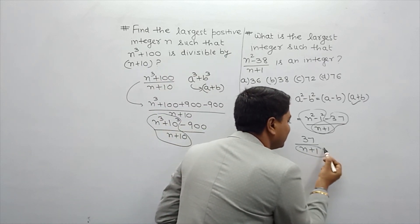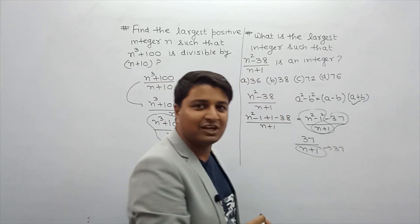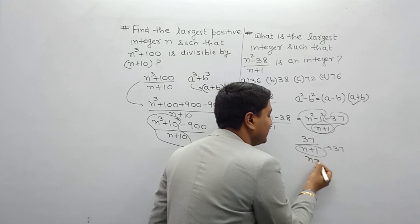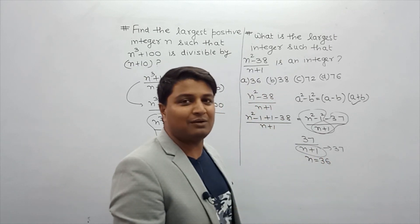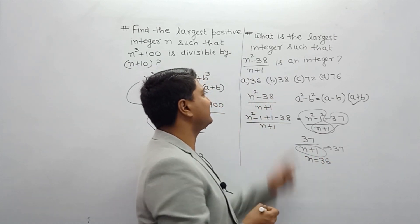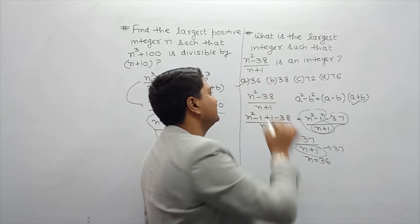As we create n square minus b, so that is what integer we can do. So the value can be 36, means that the value will be 36 and this is the answer, okay.